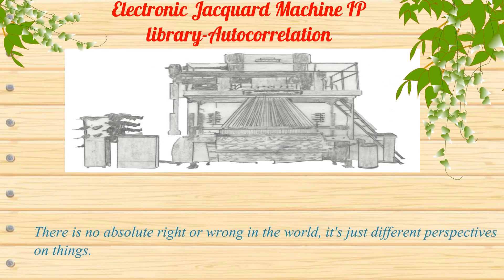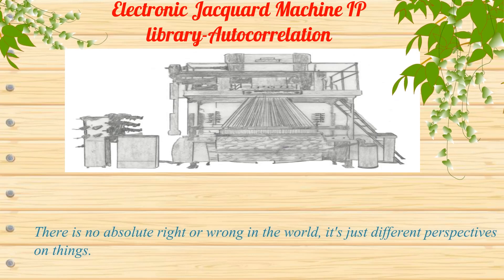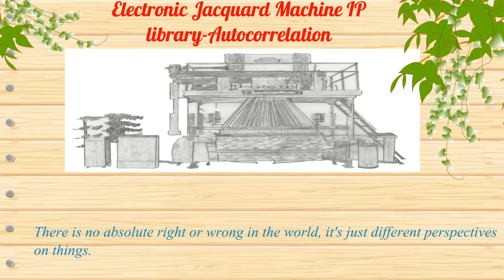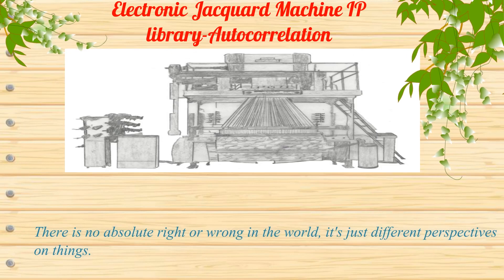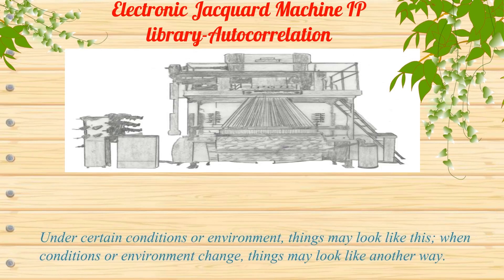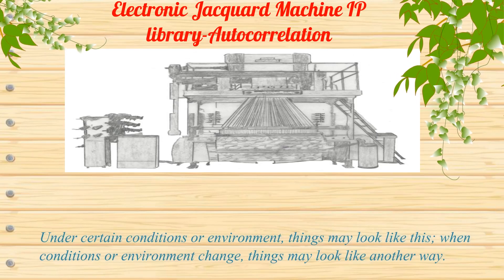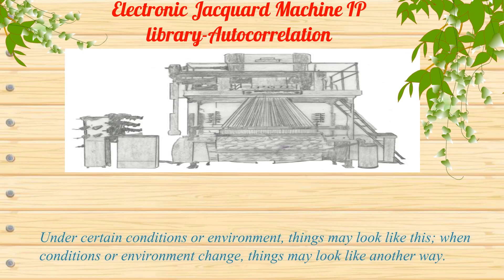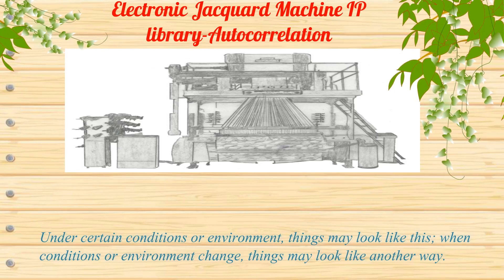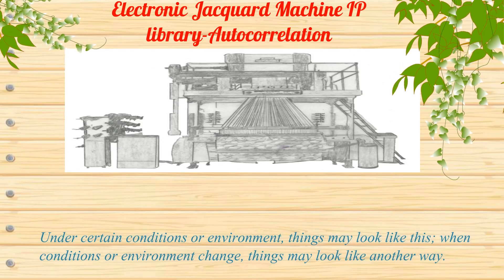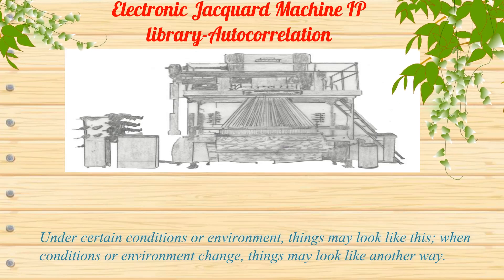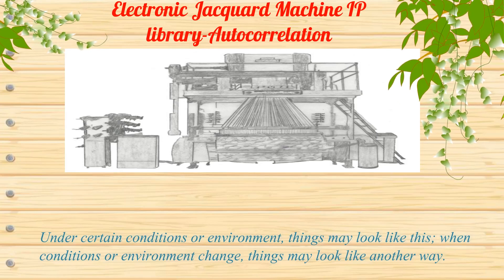There is no absolute right or wrong in the world — it is just different perspectives on things. Under certain conditions or environment, things may look like this. When conditions or environment change, things may look like another way.